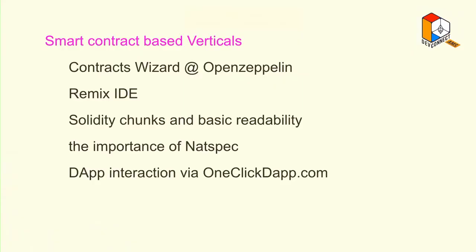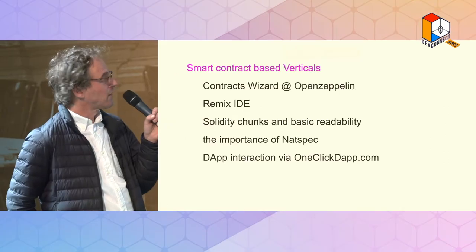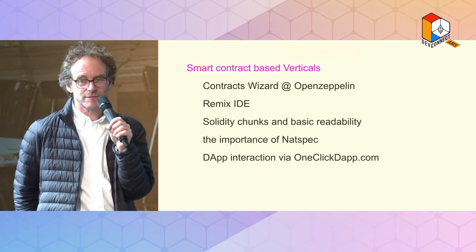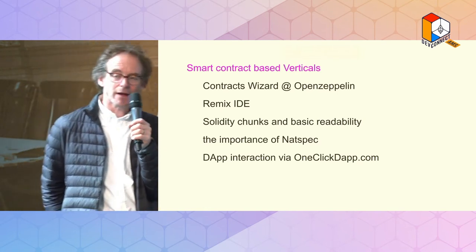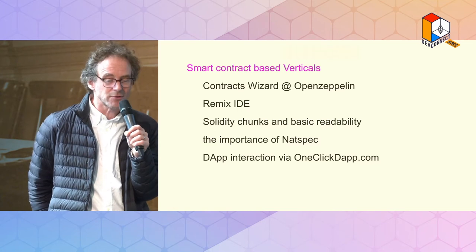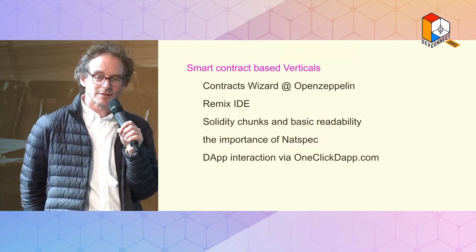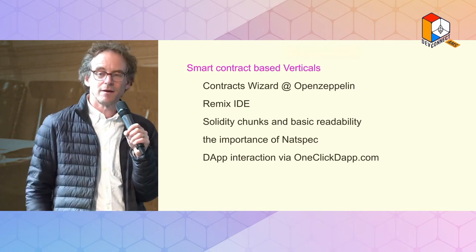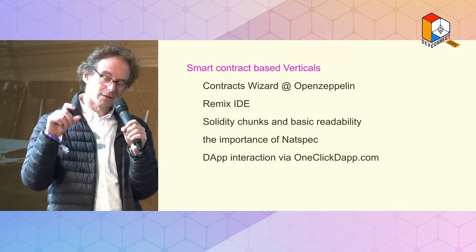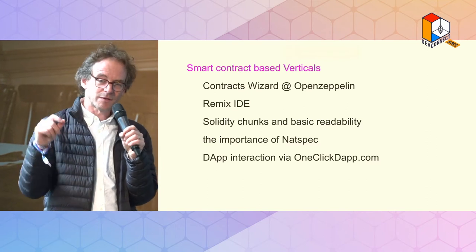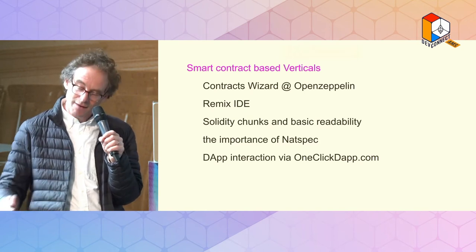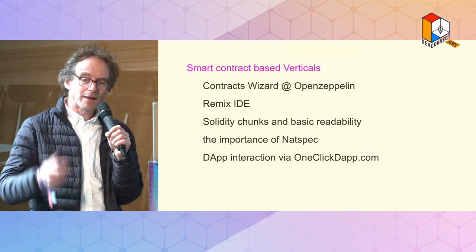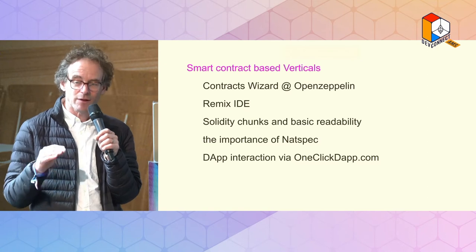We got them over to OpenZeppelin to see the templated contracts, which open directly in Remix. We showed them Remix and went through some little chunks of Solidity to show some basic concepts. Then we went through NATSpec - it's important that when you approve a transaction, you're approving something you could read. With NATSpec, you could put the description of what the transaction is about. It depends on your wallet whether they show that, but in time they will - and then you can make that something legally enforceable and a clear transaction.